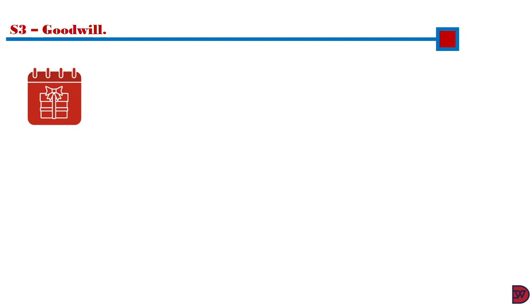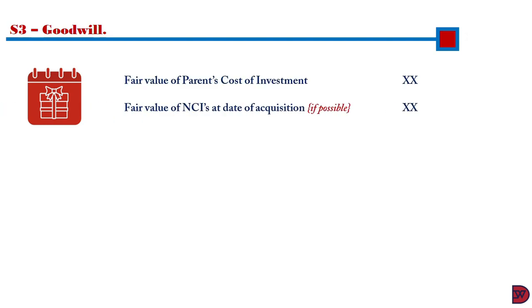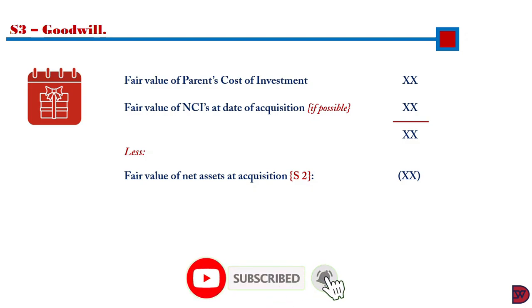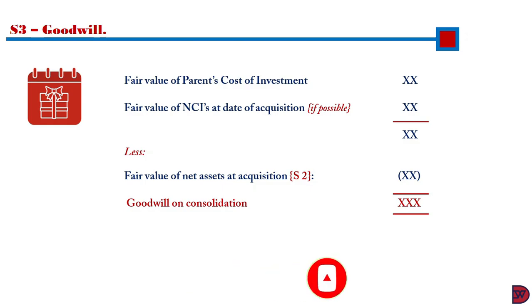Step 3 is goodwill at acquisition. As already discussed, goodwill is the difference of the consideration paid by the parent — and in certain cases including the non-controlling interest — and the net assets of the subsidiary at acquisition. In the discussion on goodwill, we had to estimate the fair value of the net assets. But now, with step 2 here, we just lift the total of the left column and fix it here. That will give us the goodwill on consolidation.